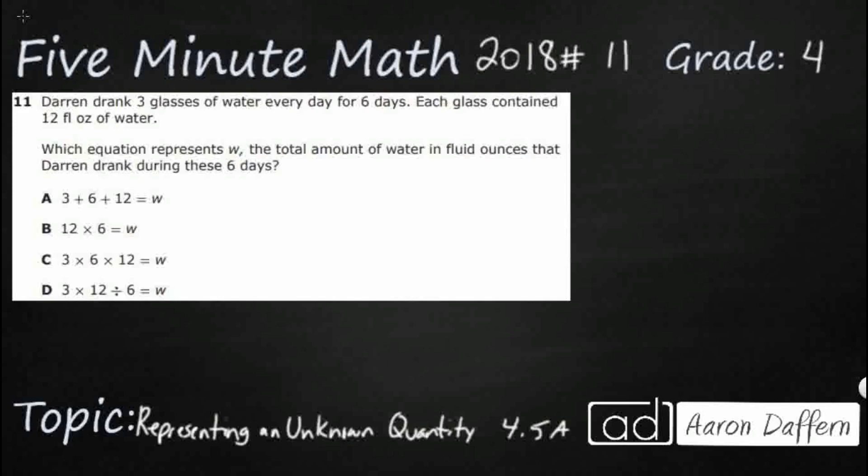So, we have Darren. Darren is drinking three glasses of water every day for six days, and each glass contained 12 fluid ounces of water. We need to find an equation to represent W, the total amount of water that he drank during these six days. So W is going to be our variable.